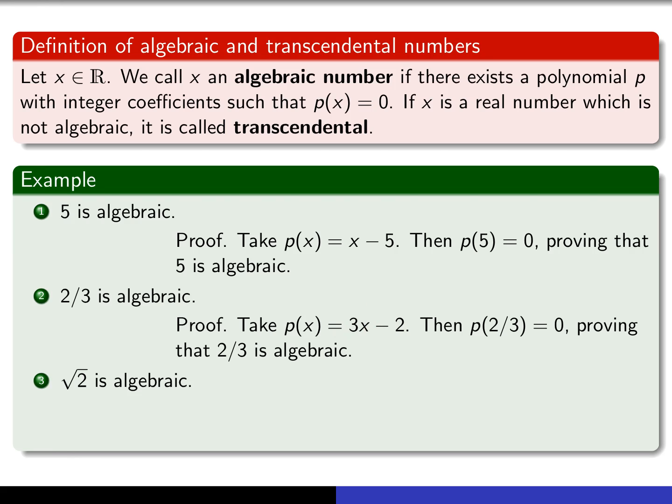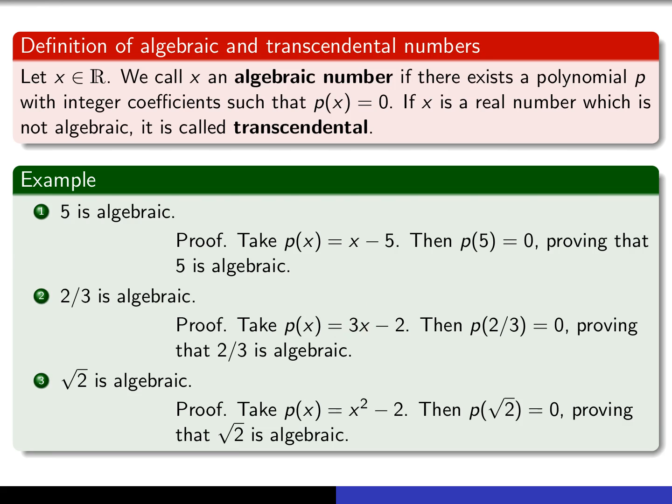The square root of 2 is also algebraic. This time we use a polynomial of higher degree: take p(x) = x² − 2, a polynomial having integer coefficients 1, 0, and −2. It's easy to check that p(√2) = 0, which proves that √2 is algebraic. A similar proof shows that the square root of any prime, or in fact the square root of any integer, is algebraic. More generally, if you take the nth root of any integer, then by using a polynomial of degree n, that number is also algebraic — so we can produce lots of irrational numbers which are, in fact, algebraic.